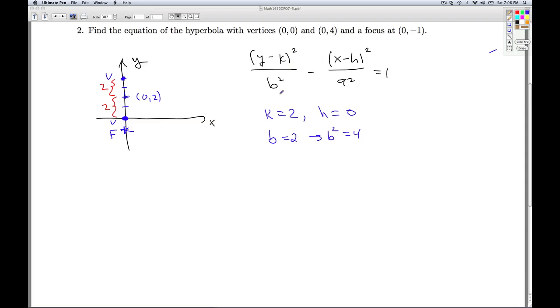So I've got the k, the h, and the b squared. All that's left to find is the a squared. Now what else do I know? I know that from the center to the focus, it's 3 units. And that's the value c we use.